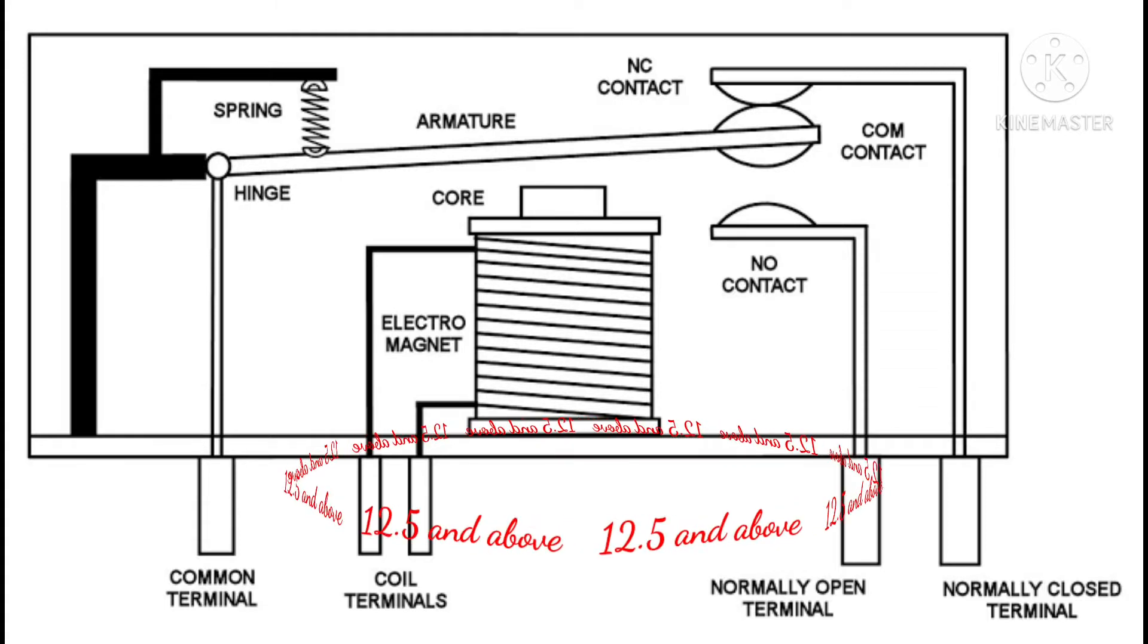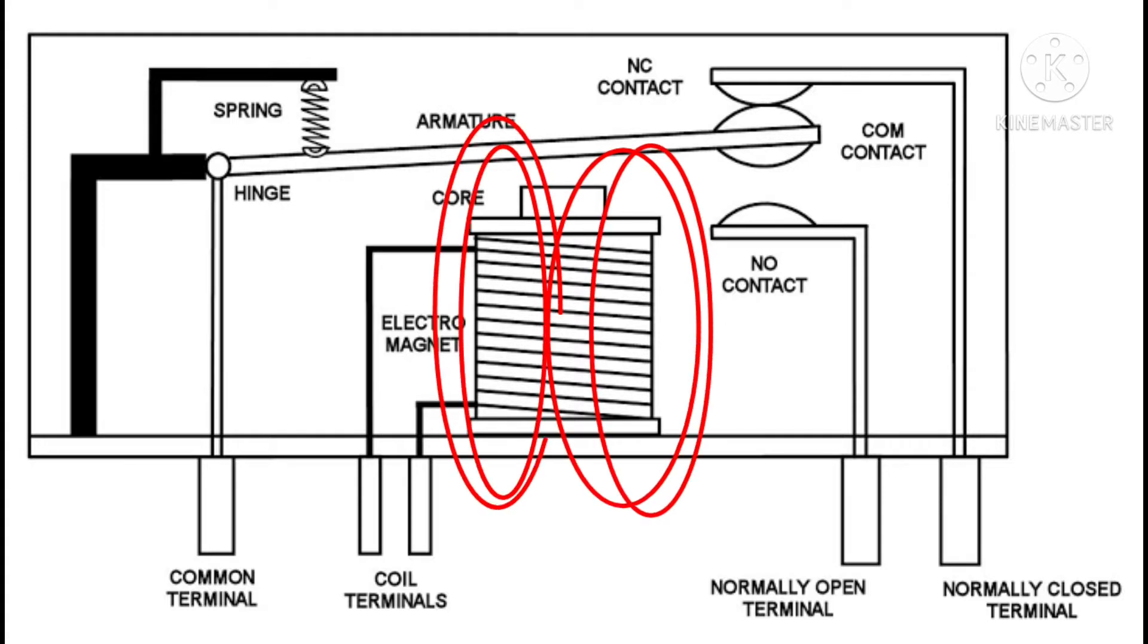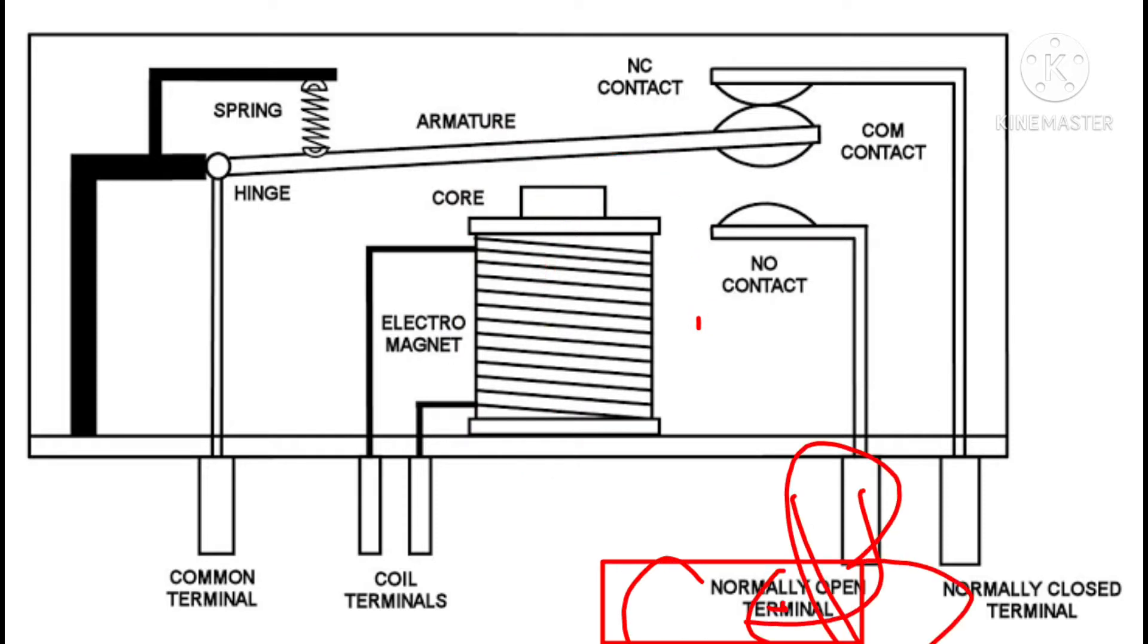When abnormal current occurs in the system, this coil will produce more electromagnet. Due to more electromagnet, the armature will attract and give a tripping command to the circuit breaker. In this coil we may apply AC or DC current, but operation will remain the same.